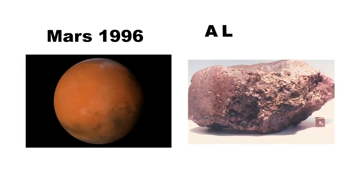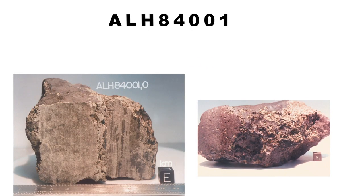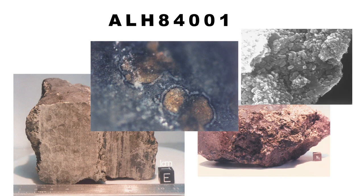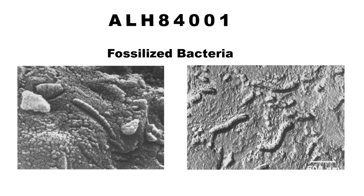In 1996, Mars rock ALH 84001 made a lot of news when NASA announced that scientists had found what they believed were fossilized bacteria inside the matrix of the rock. That caused quite a sensation, but it turned out not to be as reliable as people thought. The rock still sparks a lot of controversy. Some people say that we've tossed it aside as prematurely as we accepted that it was evidence of life on Mars, but it did get the idea of panspermia going.